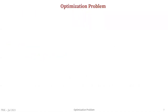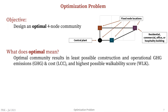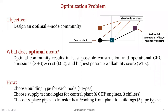The optimization problem is about designing an optimal four-node community representing an urban neighborhood. We have four nodes that could be occupied by a central plant or buildings of four types: residential, commercial, office, or hospitality. An optimal neighborhood should result in the least possible construction and operational greenhouse gas emissions, lowest life cycle cost, and highest walkability score. The algorithm achieves this by choosing building types for each node, supply technologies for the central plant, and pipe placement for transferring heating and cooling. We let the conditional GAN implicitly model the pipeline positioning and selection.